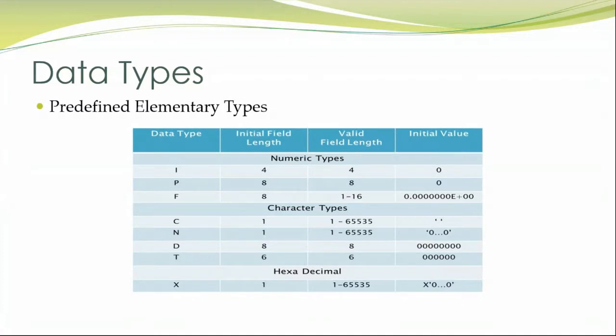We have the floating type data type which is denoted by F, whose initial field length is 8 digits and which can have a maximum of 1 to 16 digits, whose initial value is 0.00.